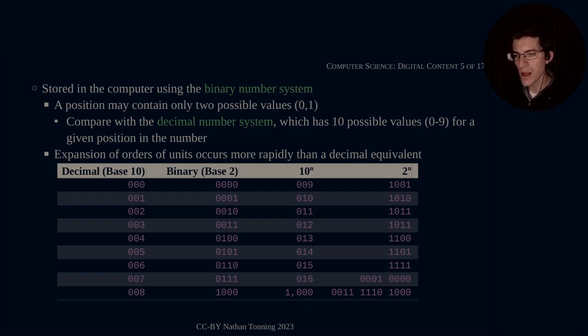So we have already mentioned binary in our previous video when we were talking about how it's implemented in computer systems. So this is just going to be a little bit more of a fleshing out of the subject of binary. So what is binary? A position may contain only two possible values. So we compare that with the decimal number system, which can have 10 possible values, 0 through 9. So you think about it, 0, 1, 2, 3, 4, 5, 6, 7, 8, 9. And then 10, we have to start with 1 in a new position, what's called the order of units. So we put it in the 10s place and then reset our 1s place or our integers place back at 0.